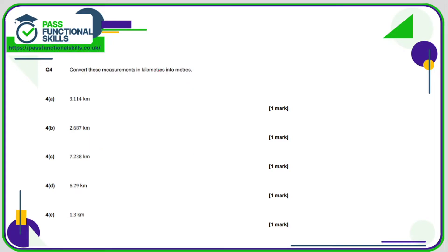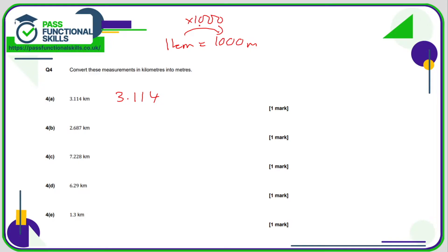Now kilometres into metres. One kilometre equals 1000 metres, so kilometres into metres means multiplying by 1000. So we've got 3.114. If we're multiplying by 1000, we move the decimal point three positions, making the number bigger, so the decimal point moves to the right. You might want to add some zeros on the right-hand side to help.